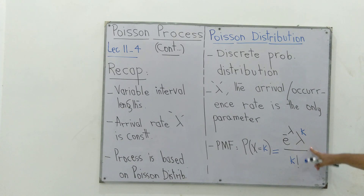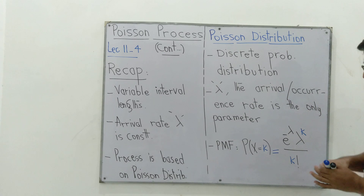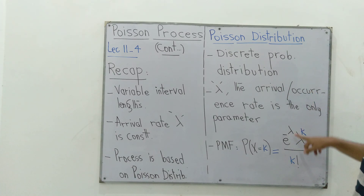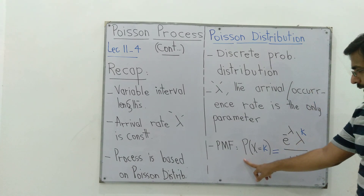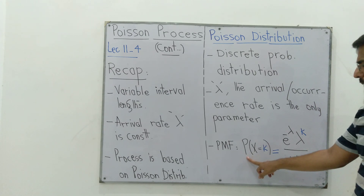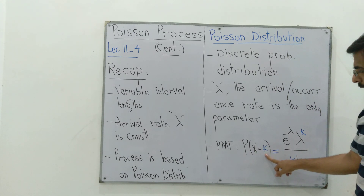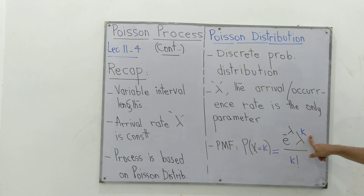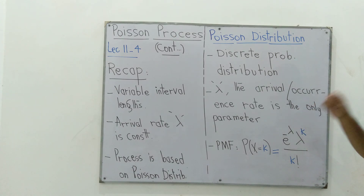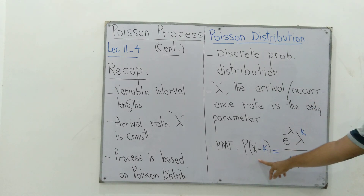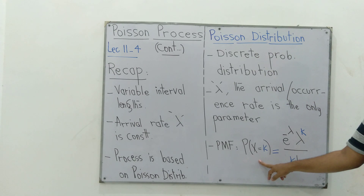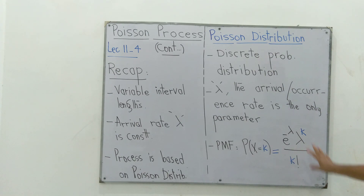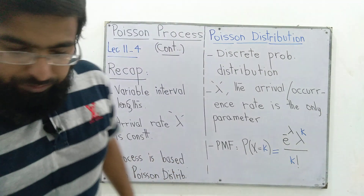The PMF is given by e to the minus lambda, times lambda to the k, over k factorial, where lambda is the arrival rate or occurrence rate. This PMF gives the probability of k occurrences. When k is equal to lambda, we get the maximum probability, and for all other values the probability is less than that maximum.